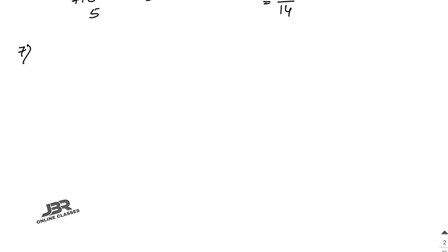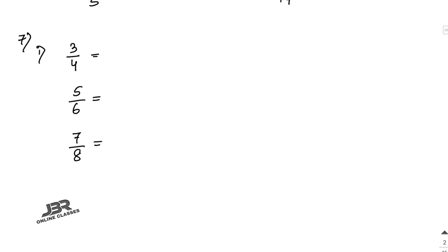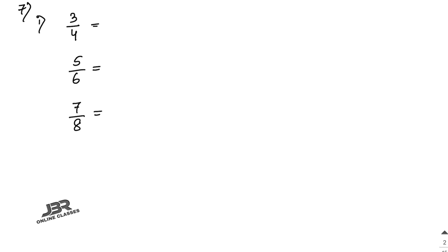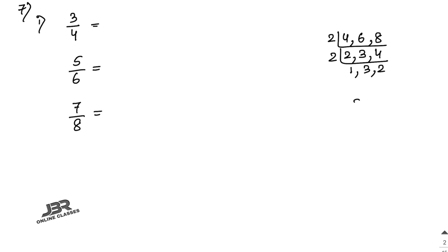Sum number 7: convert the following fractions into equivalent like fractions. The fractions are 3 by 4, 5 by 6, and 7 by 8. Equivalent like fractions means making all denominators the same. First find the LCM of 4, 6, and 8. Using prime factorization: LCM is 2 into 2 into 2 into 3, which equals 24.